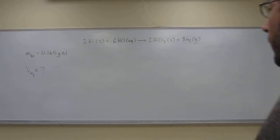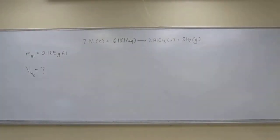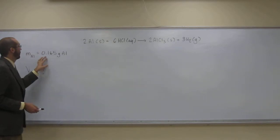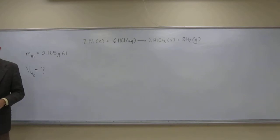Okay, so let's try this one. It says, what would be the volume of hydrogen gas that was produced from hydrochloric acid reacting with 0.165 grams of aluminum metal according to the reaction equation picture?